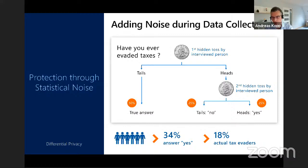In today's differential privacy settings, we're not flipping coins — noise is added automatically. For example, Windows 10 collects diagnostic data from end-user devices, applies differentially private random noise locally before transmitting to Microsoft for analysis. Google and Apple devices use the same concept — called local differential privacy — on end-user devices.